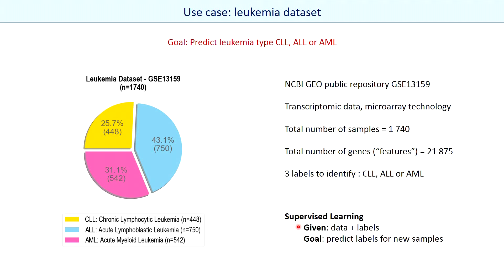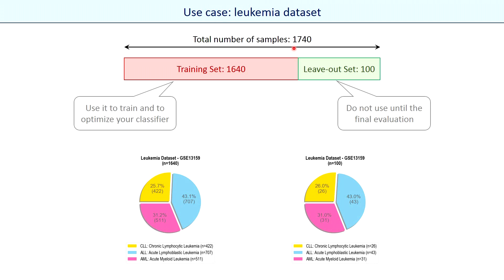This type of classification problem is called supervised learning when we have data and labels for each sample. We will randomly split our total dataset of 1740 samples into two datasets: 1640 samples for training and optimization of our machine learning algorithm, and 100 samples left out for the final evaluation. We can imagine that these 100 samples represent new patients with leukemia for which we should identify their leukemia types. During the data challenge you will be given a training dataset of approximately 500 samples with labels and a final test dataset with 100 samples without labels, evaluated on prediction accuracy.